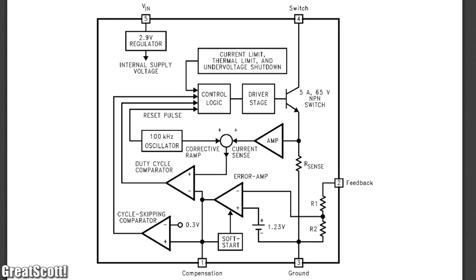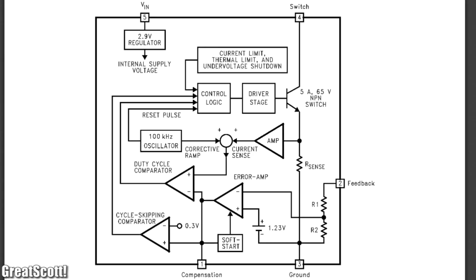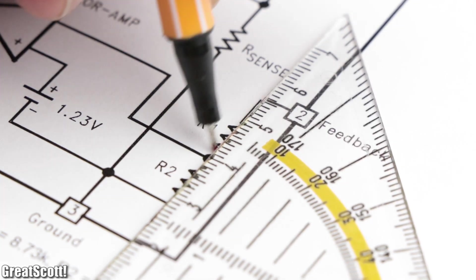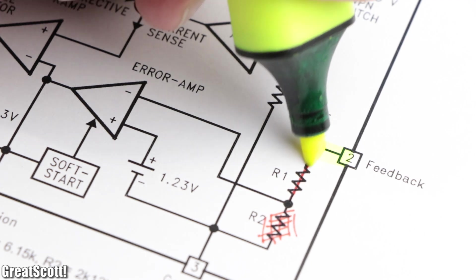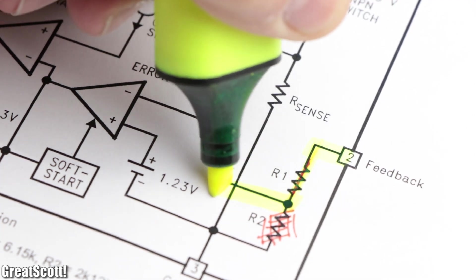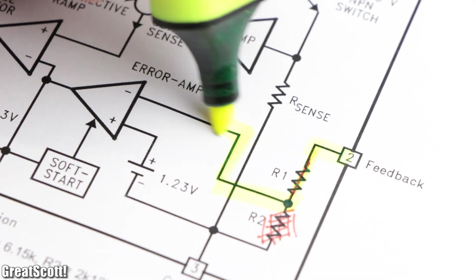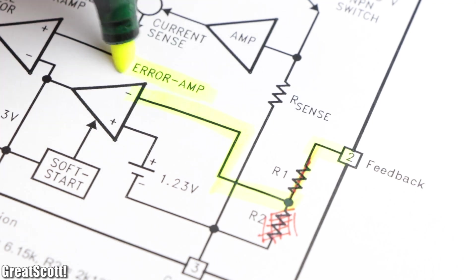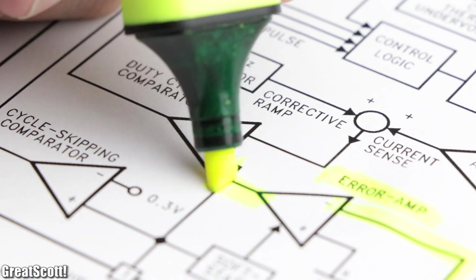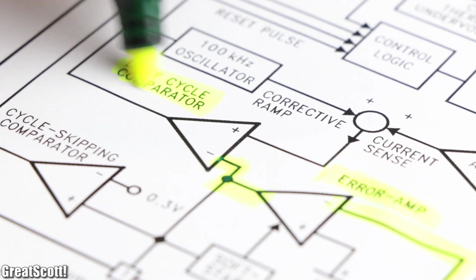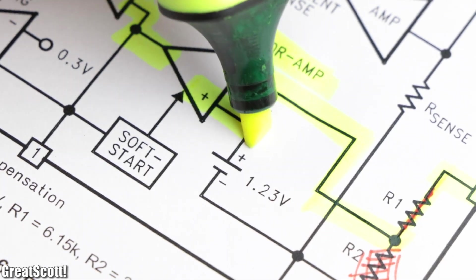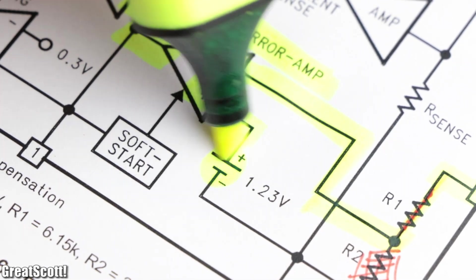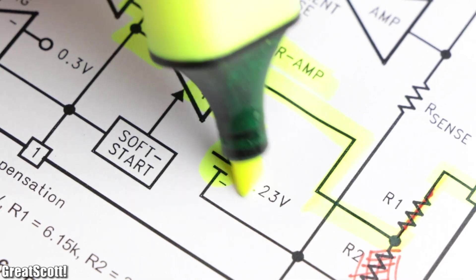If we have a look at the block diagram of the IC, we can firstly short R1 and remove R2, since we use the adjustable version. And then we can see that this feedback voltage is directly connected to the inverting input of the error amplifier, which directly influences the duty cycle of the PWM signal. On the non-inverting side of the op amp however, we can see a constant 1.23V reference voltage.